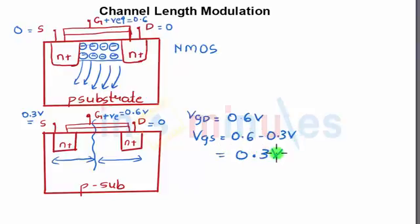So here we see that the VGS or the gate to source voltage is reduced whereas the gate to drain voltage is still 0.6 volts. Now what can you say about the number of holes being repelled from this region versus that region.